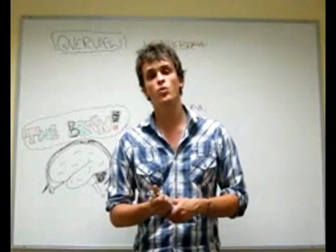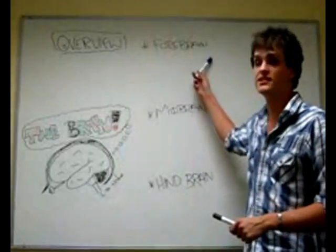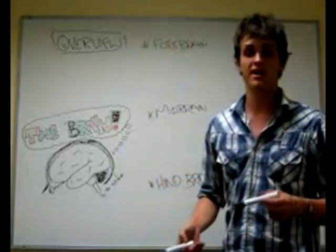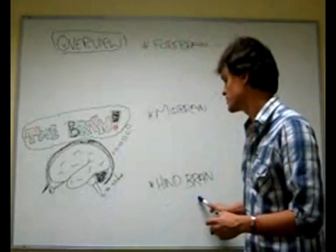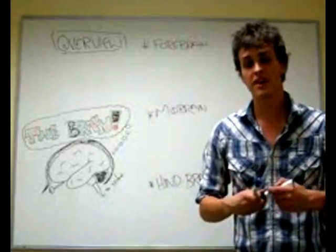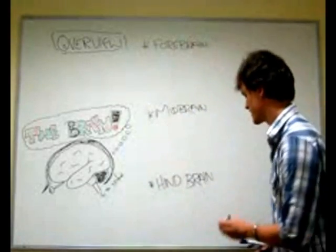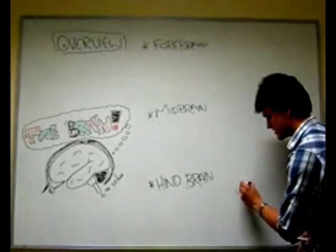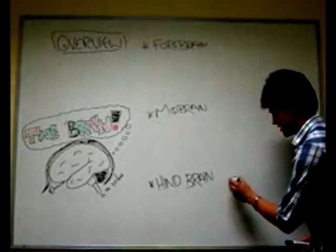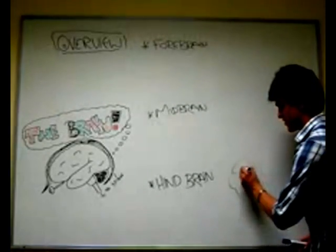With the brain, we've learned that there are three different sections. The first one, the hindbrain, is the most primitive, yet it consists of three different segments: the medulla, the pons, and the cerebellum.